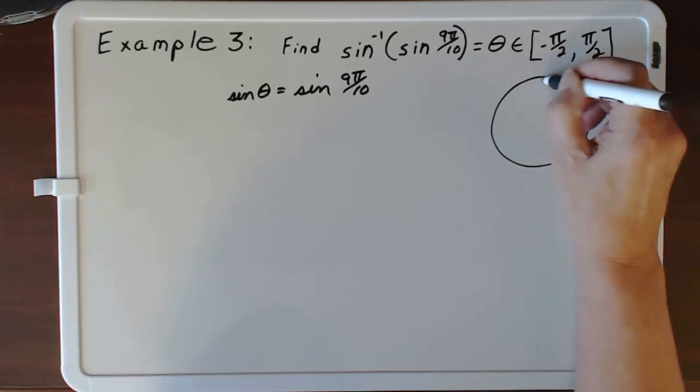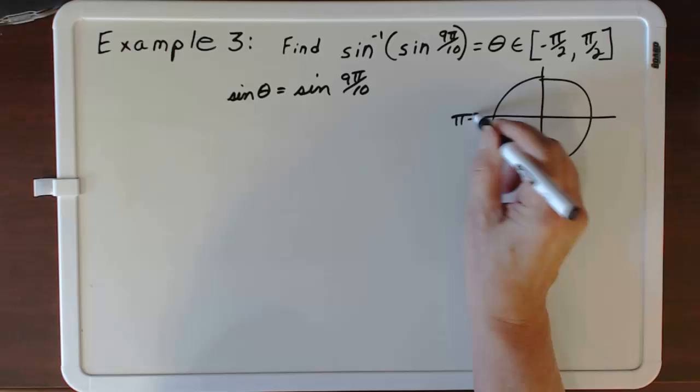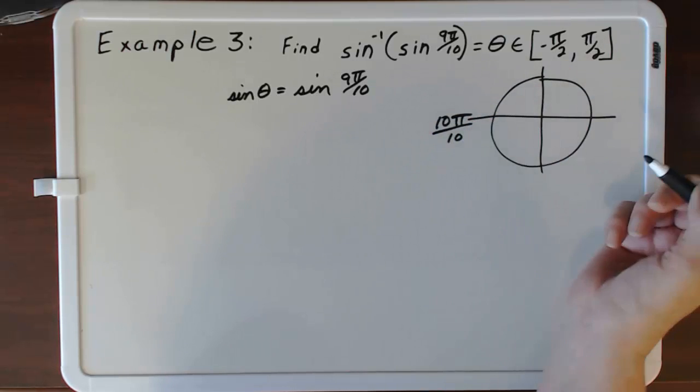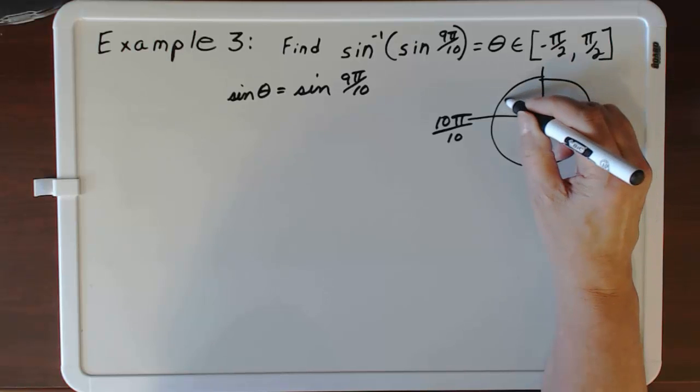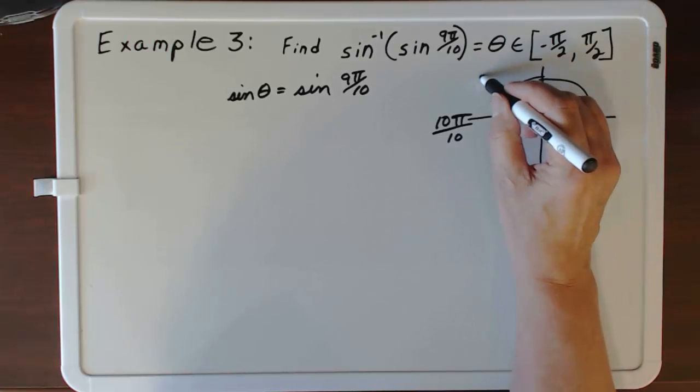If we look at the unit circle, we can see this π, which is equivalent to 10π over 10. Therefore, 9π over 10 is somewhere in the second quadrant.